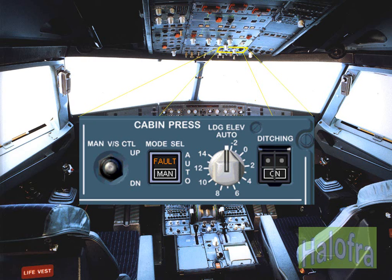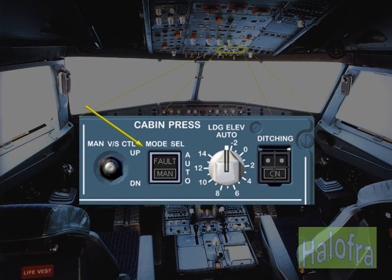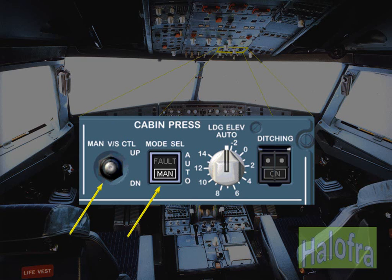The cabin pressure panel on the overhead panel contains controls to operate the pressurization system. Under normal conditions, no pilot action is required on this panel during flight. The pressurization mode select switch has two settings: automatic and manual. The normal position for this switch is lights out; in this position, the pressurization system is in automatic mode. The mode select switch enables the system to be used in manual mode in case of failure of the automatic function.